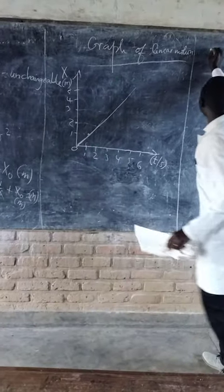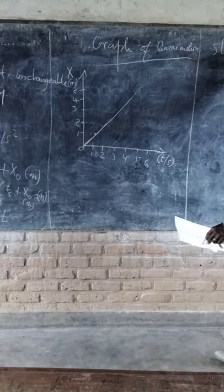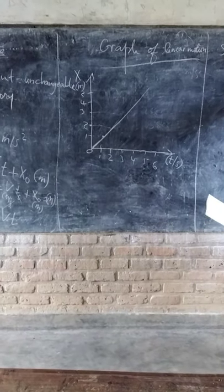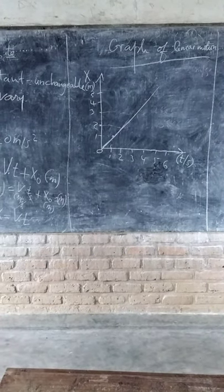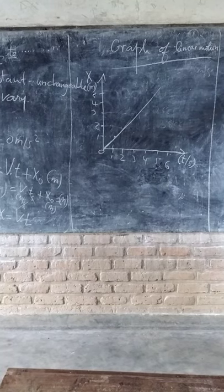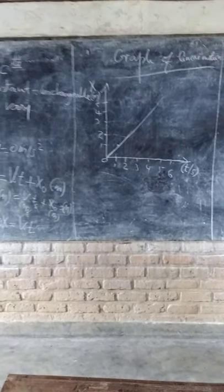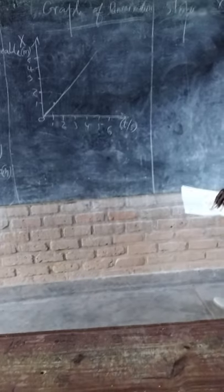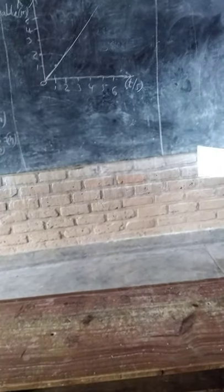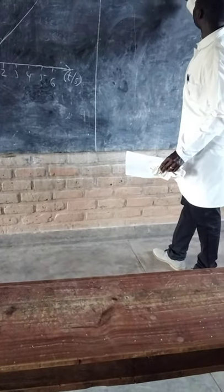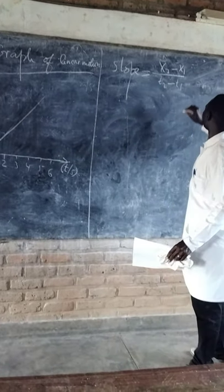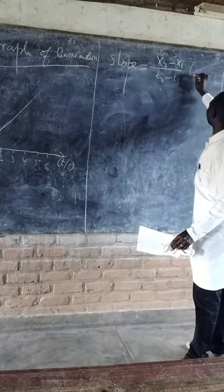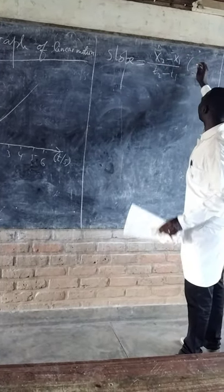Yes, by finding the slope, we see that slope is equal to x2 minus x1 by time 2 minus time 1. That's the slope. x is in meters.